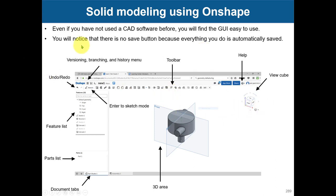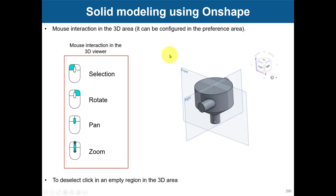Something important to point out is that sometimes the first time you start to use OnShape, you will realize that there is no save button. Everything is saved automatically. In theory, you have unlimited undo, which is a very neat capability. And also there is a help button, very useful — just click there and you are going to get very good help.